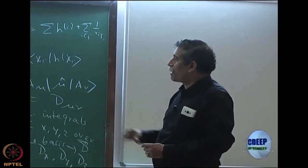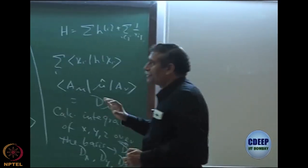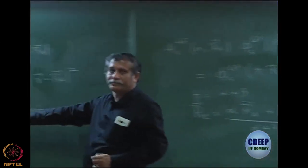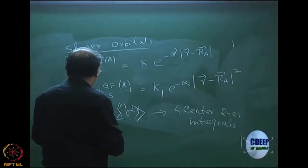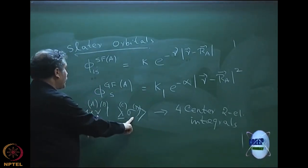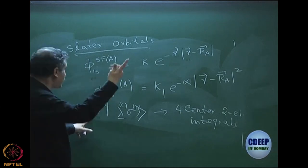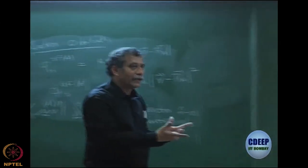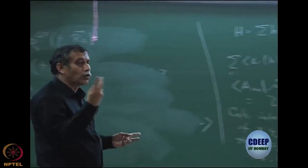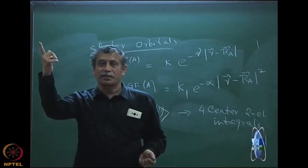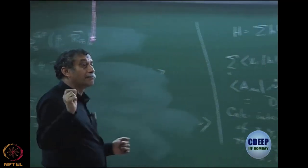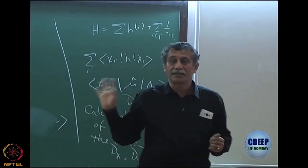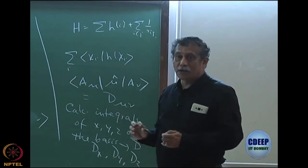This property of the Gaussian product makes computations extremely easy, because now you have only a two-center integral. You multiply on coordinate one — mu and lambda together give one Gaussian on a particular center, and nu and sigma give another. Between A and C you get some center A', and between B and D you get B'. The entire integral becomes a two-electron integral of just two Gaussians. There will no longer be four Gaussians, because the product is one Gaussian, making it much faster computationally.